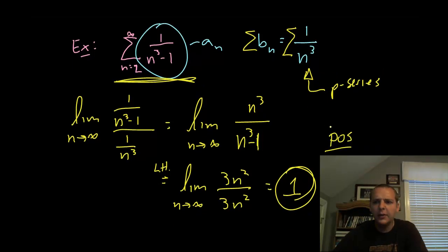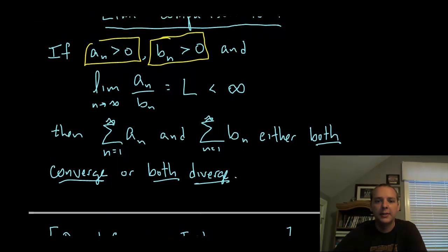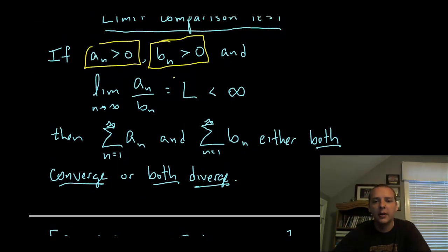Now I do need to emphasize this point of a positive finite number. If this limit had been zero, then that would not have actually satisfied this test. And in case I didn't write that here, this limit here, that L, needs to not only be finite but it also needs to be positive.